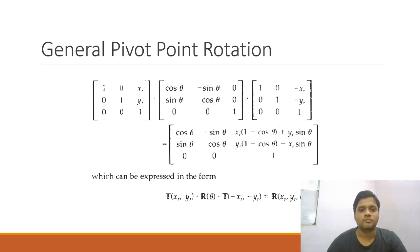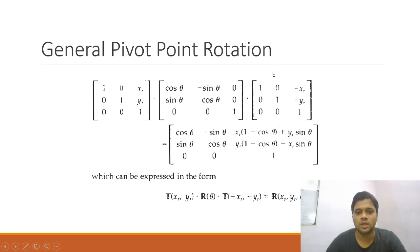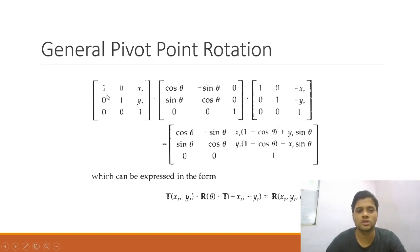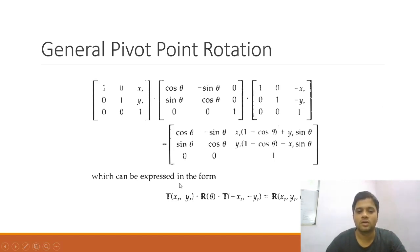In matrix form: the back-translation is [1 0 −xr / 0 1 −yr / 0 0 1], pre-multiplied by the rotation matrix [cosθ −sinθ 0 / sinθ cosθ 0 / 0 0 1], pre-multiplied by the forward translation [1 0 xr / 0 1 yr / 0 0 1]. Multiply these together and then apply to the object matrix on the rightmost side.